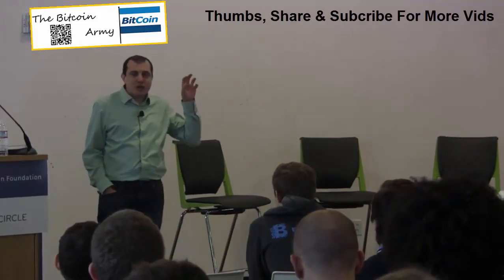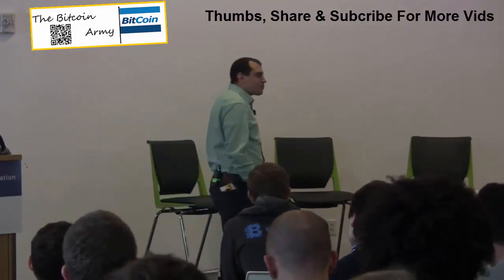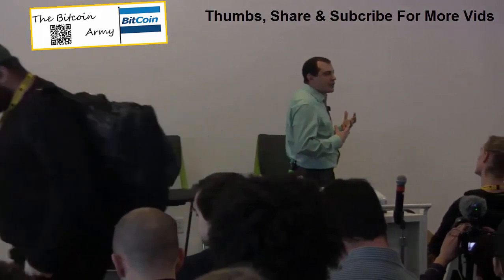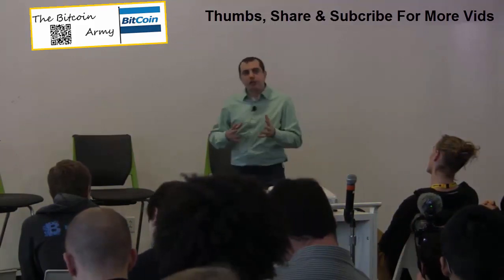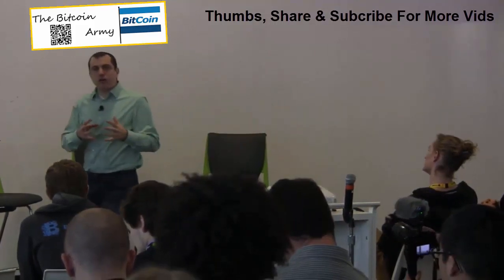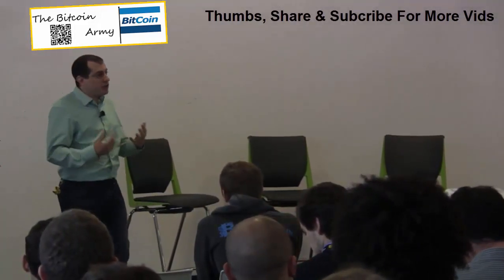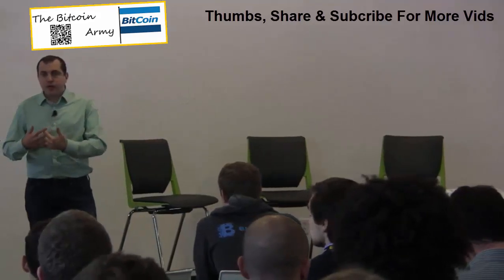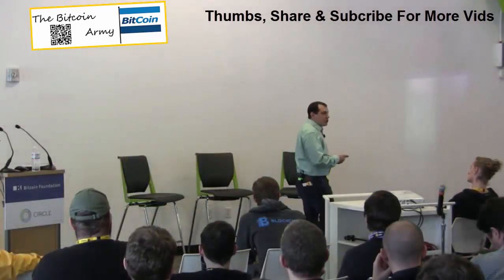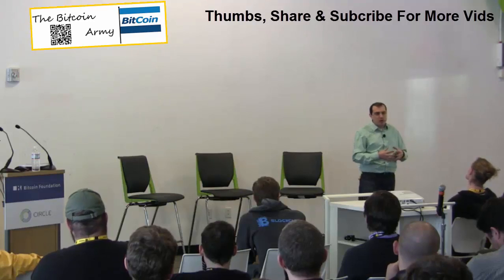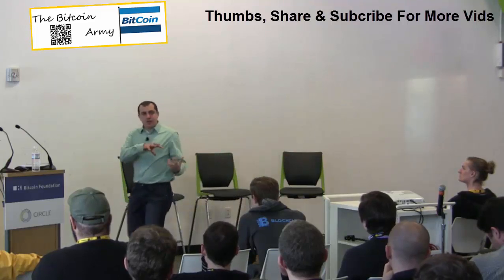Pointing out irreversible transactions as a problem in Bitcoin is to take one of Bitcoin's biggest strengths and think it's a weakness. One of the interesting things about Bitcoin is that it gives us a hard core of trust — the decentralized trust model. And from that hard core of trust you can extend and create guarantees: guarantees of performance, verifiability, security, and in the case of transactions, irreversibility. Irreversibility is a feature that derives directly from that hard core of trust.